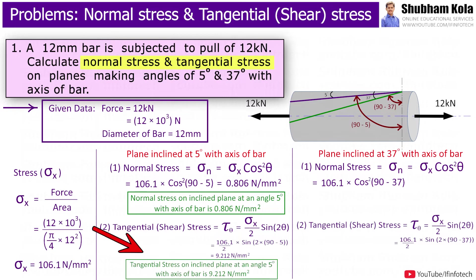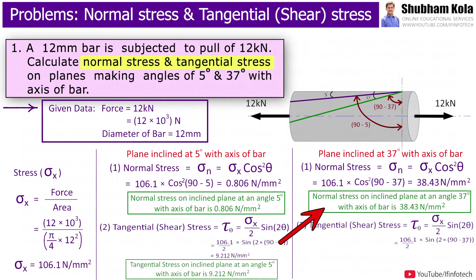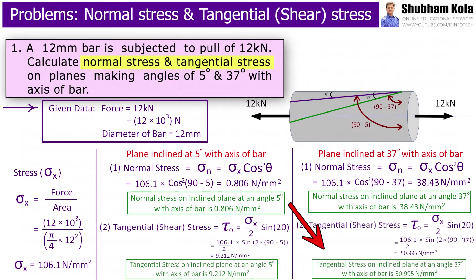The tangential stress at 5° is 9.212 N/mm². For the normal stress on the inclined plane at an angle of 37° with the axis of the bar, the result is 38.43 N/mm², and the tangential stress is 50.995 N/mm².